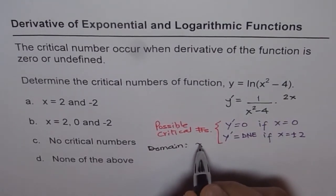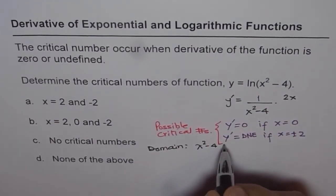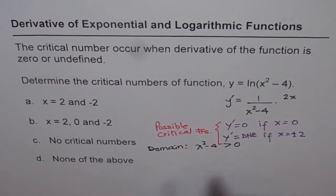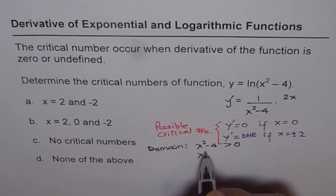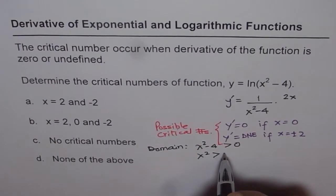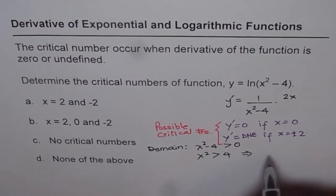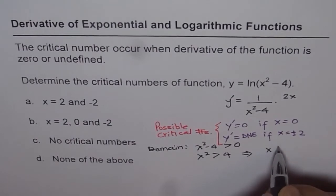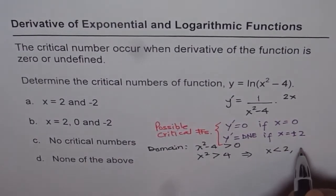For the domain, x² - 4 should be greater than 0. That implies x² is greater than 4, which means x is less than -2 or x is greater than 2.